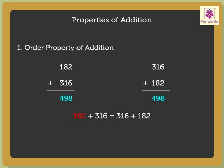Hence, 182 plus 316 is equal to 316 plus 182. Thus, we know that changing the order of the addends does not change the sum. We can say addition is commutative.